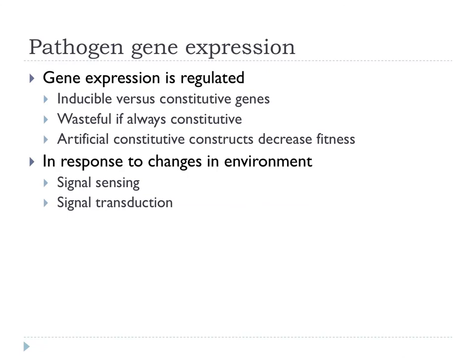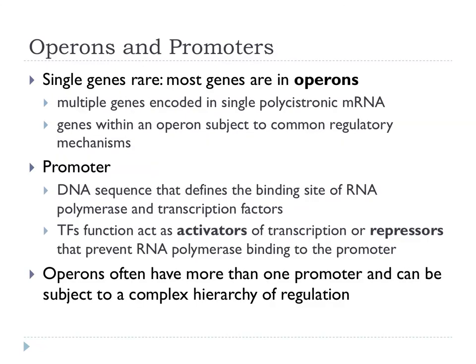We have to regulate gene expression — if we just leave genes on all the time, this is wasteful and creates problems. For those who have not done much genetics, just to remind you that in bacteria most of these genes occur in operons. Having a single gene on its own with a promoter is fairly unusual. Most of the time we have these multiple genes encoded in what's known as a polycistronic mRNA, effectively meaning polygenic mRNA. The rationale in bacteria is that all those genes with a common function can be subject to a common regulatory mechanism.